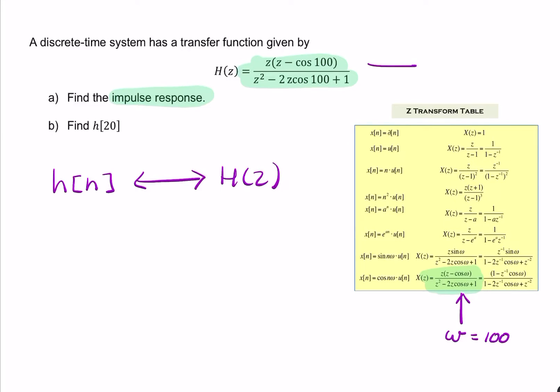So the time domain function, H of N, would simply be a cosine. So H of N equals cosine 100, that's your omega, N, multiplied by a unit step, to make sure that this is a causal signal, or a causal system. So that's my impulse response, H of N. We've got that straight from the table there.